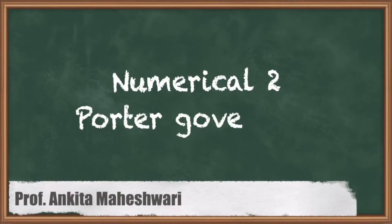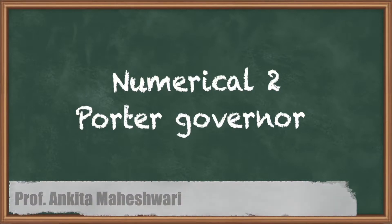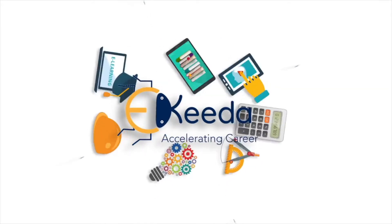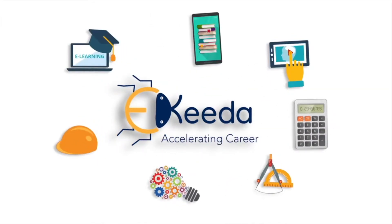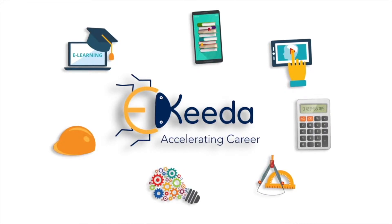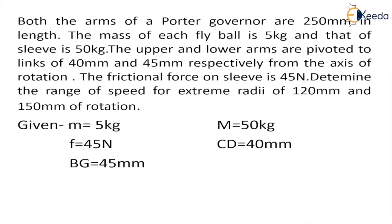Hello everyone. In this video we will be discussing a numerical on Porter Governor. Let's see the numerical. In this numerical we are given the length of the arms — the length of both the arms is 250 mm.